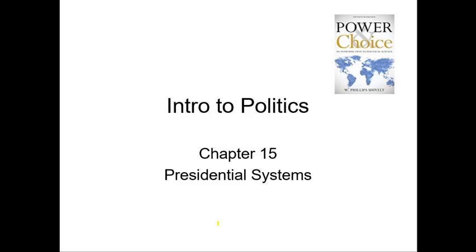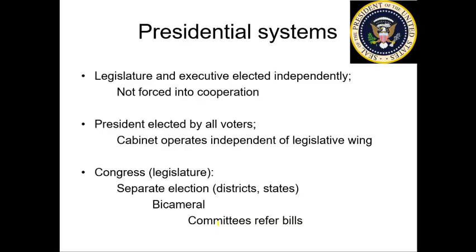Chapter 15 is on presidential systems, a follow-up to chapter 14 on parliamentary systems. You are more than likely to be familiar with them if you've been raised in the U.S. political system. In presidential systems, the legislature and the executive are elected independently of each other — as shown in the flow chart from the previous chapter — and they are not forced into cooperation.